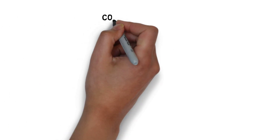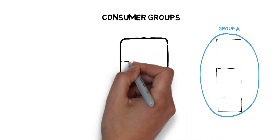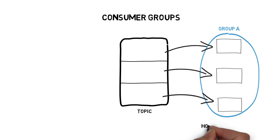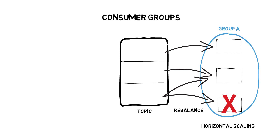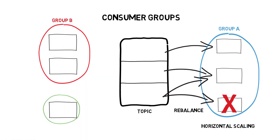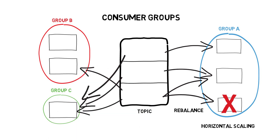Consumers always belong to a specific consumer group. Consumers within a consumer group work together to consume a topic, and the group ensures that each partition is only consumed by one member. This allows consumers to scale horizontally to handle topics with a large number of messages. Additionally, if a single consumer fails, the remaining members will rebalance the partitions. In case we want to consume the same messages multiple times, consumers must belong to different consumer groups, which is useful when multiple applications need to process the same data separately.